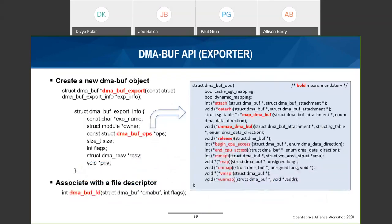Here is an overview of the DMA-BUF API on the exporter side. There are two main functions: dma_buf_export and dma_buf_fd. dma_buf_export is the main function to export the buffer as a DMA-BUF object; calling it requires defining a set of operations, several of which are mandatory — most importantly map_dma_buf, which performs the address translation similarly to what dma_map_sg does and also pins the buffer. There is a corresponding unmap function and another function to release the DMA-BUF. The dma_buf_fd function associates the DMA-BUF object with a file descriptor.